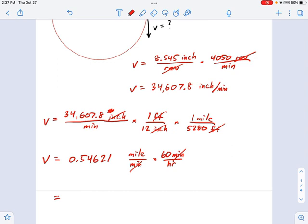We're going to get something in terms of miles per hour. This is calling for us to multiply by 60. So we multiply by 60 and we get 32.77 miles per hour, or MPH.